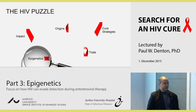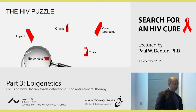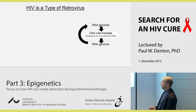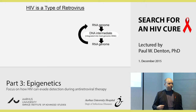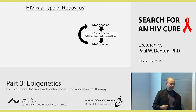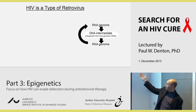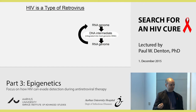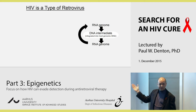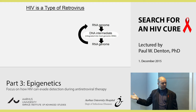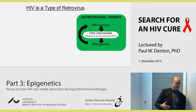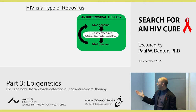Let's switch gears again and talk about epigenetics — specifically the epigenetics of HIV. HIV is a type of retrovirus, meaning it starts as an RNA genome, has a DNA intermediate that integrates into the host genome, and then goes back to RNA. That's why we call the treatment antiretroviral therapy — it targets the retrovirus.